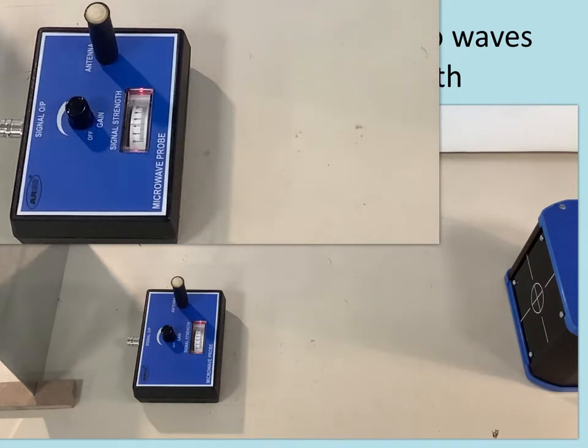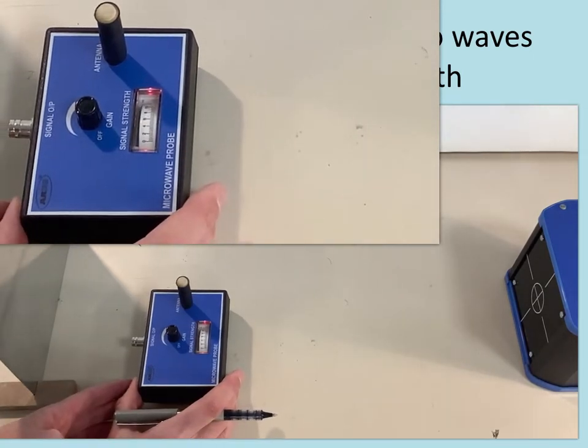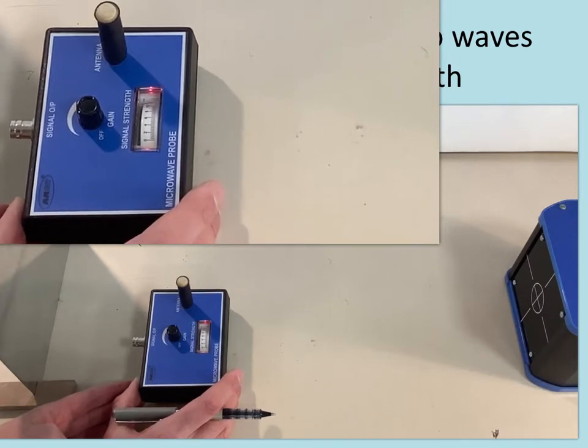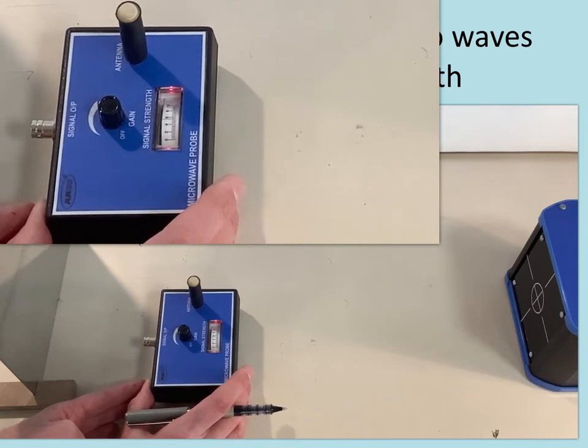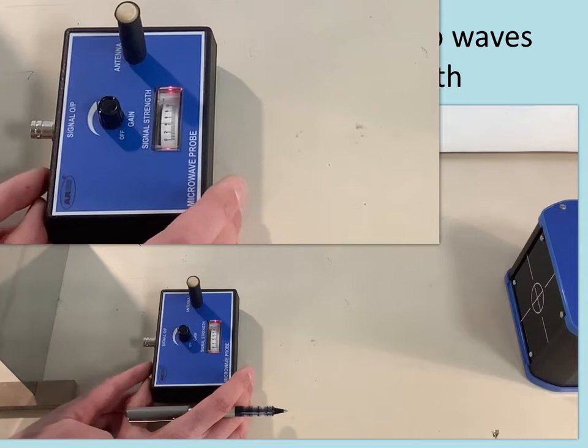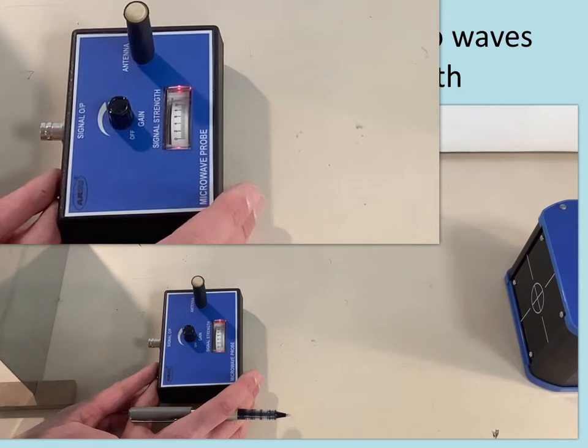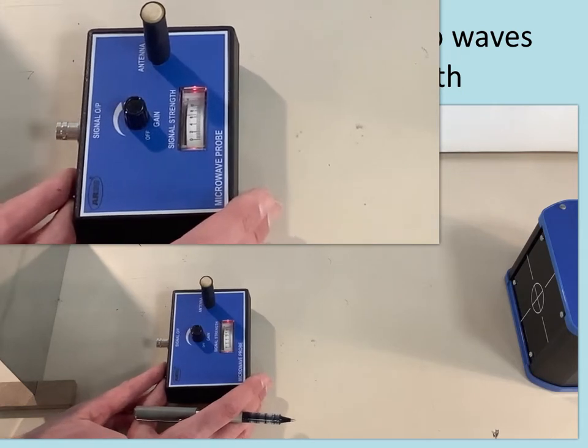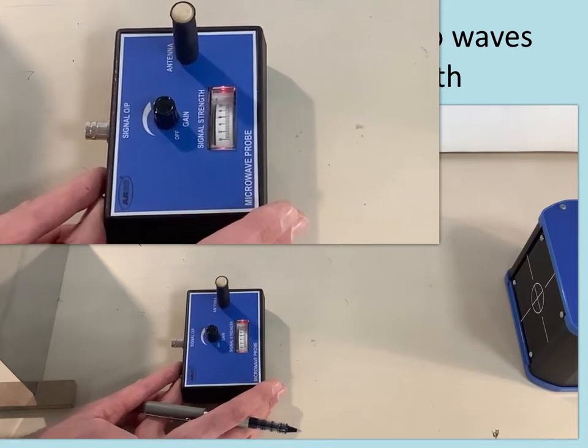So at the moment it's kind of getting a medium signal strength but if I slide this then hopefully you can see that the signal strength has gone up to 10 which is suggesting now I'm at an anti-node and if I move it on the signal strength reduces down to about 4 which would be a node and then I move it along the signal strength goes up to 10 which would be an anti-node and so I'm moving through node, anti-node, node, anti-node.